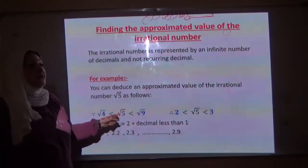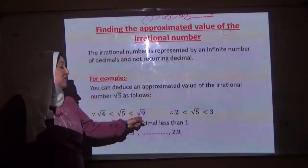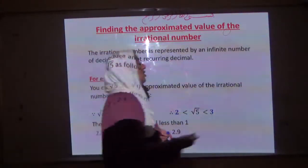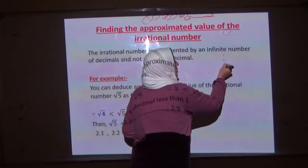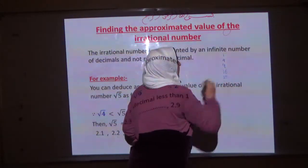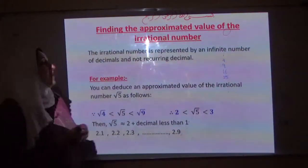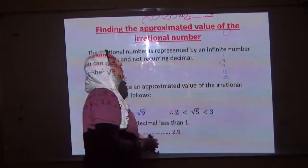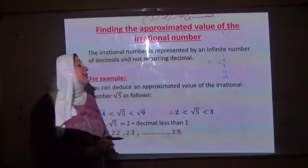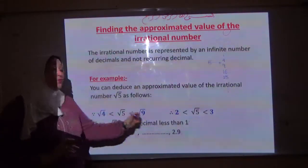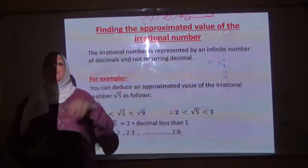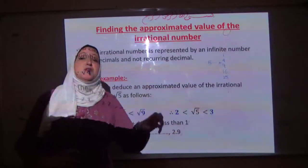Square root 5 is more than square root 4 and less than square root 9. Let us write the perfect square numbers: 1, 4, 9, 16, 25, and so on. 5 lies between 4 and 9, so root 5 lies between root 4 and root 9. That means root 5 is more than 2 and less than 3, so the value of root 5 lies between 2 and 3.